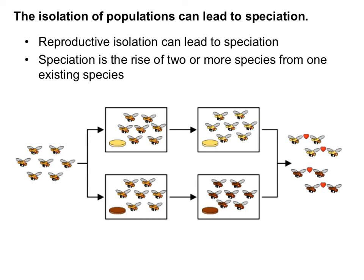The isolation of populations can lead to speciation, which we call reproductive isolation — when organisms are isolated from one another and can no longer reproduce with each other. Speciation is the rise of two or more species from one existing species, in other words, how new species occur. In this image, orange flies were given two different types of nectar — yellow and red — and now we have yellow flies and red flies. The yellow flies only want to mate with yellow flies, and red flies only with red, isolating them reproductively.